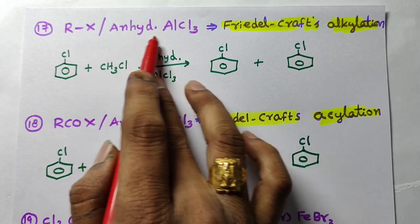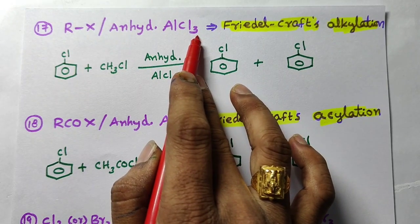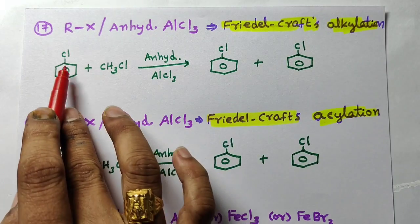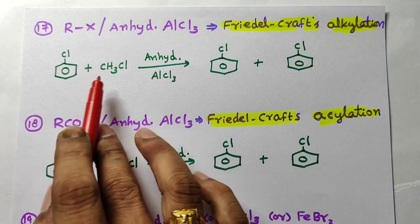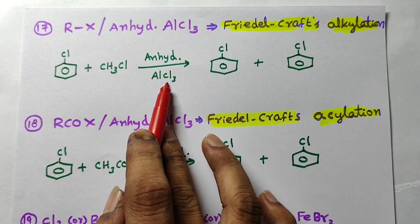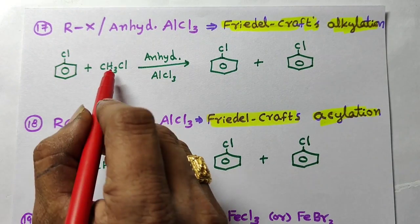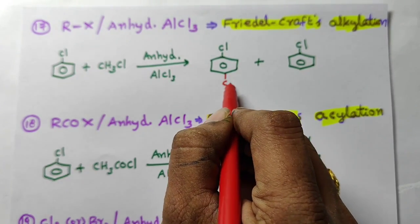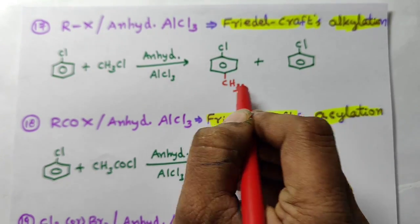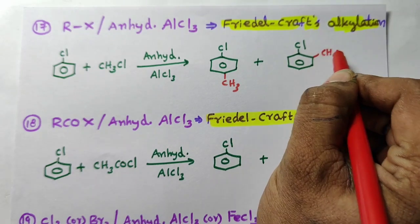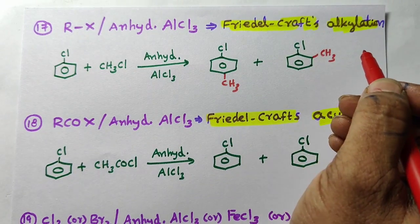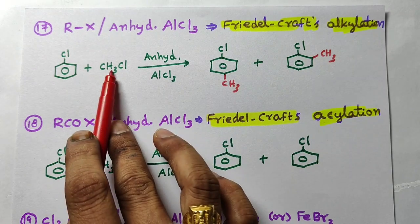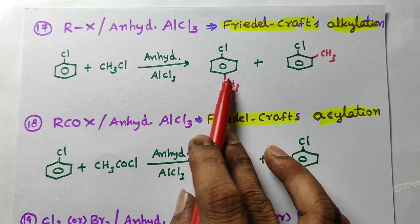Next: alkyl halide in the presence of anhydrous AlCl3, which is a Lewis acid, used in Friedel-Crafts alkylation reaction. For example, chlorobenzene is treated with methyl chloride in the presence of anhydrous AlCl3. Here CH3⁺ is the electrophile, which attacks at the para position (major product) and ortho position (minor product), because chlorine is an ortho-para directing group.